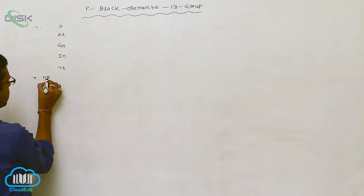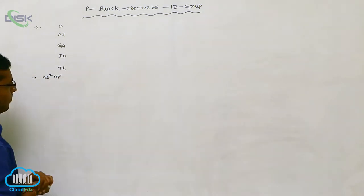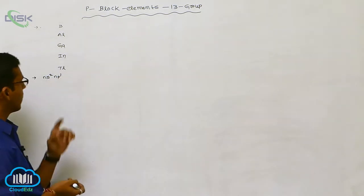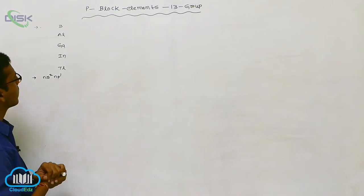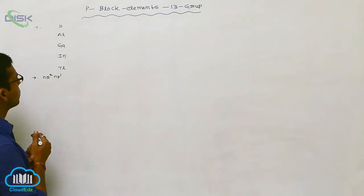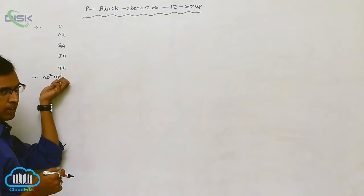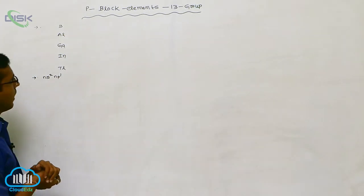The general electronic configuration for 13A group elements is NS2 and P1. The outermost shell contains three electrons total: two in the S orbital plus one in the P orbital. The differentiating electron enters the P orbital, which is why these belong to the P block elements.